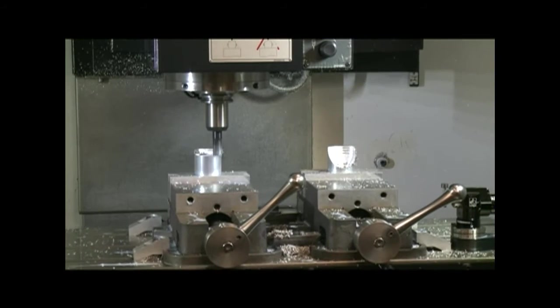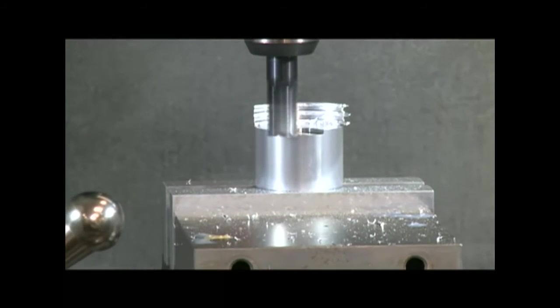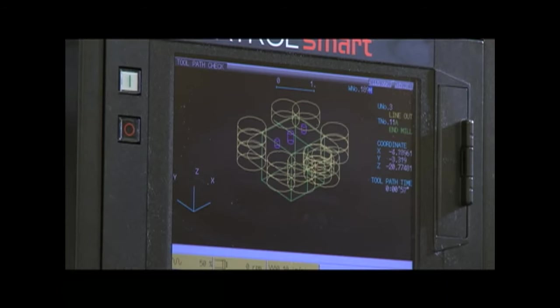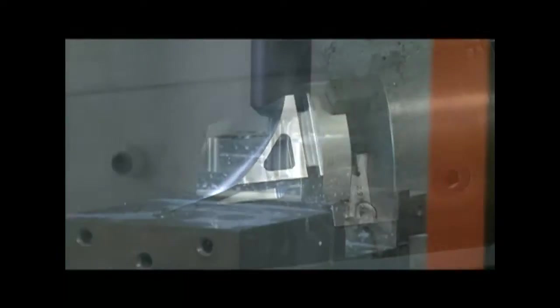The fourth axis can be a simple indexer or it can be a true fourth axis. We have both types here at KAF and the programmer can graphically depict and demonstrate the rotary action to expedite the manufacture of complex shapes.